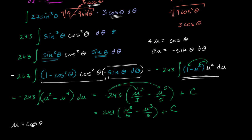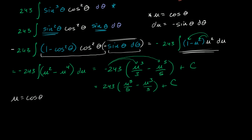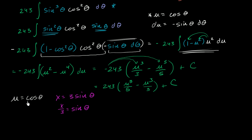We know that u is equal to cosine theta, and we know the relationship between x and theta: x is equal to 3 sine theta. So we can also write x over 3 is equal to sine theta, dividing both sides by 3. If we can re-express cosine theta in terms of sine theta, we can replace all the sine thetas with x over 3, and we're done.